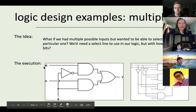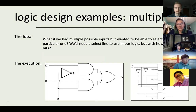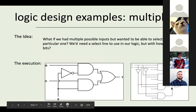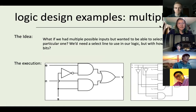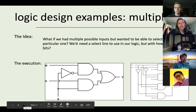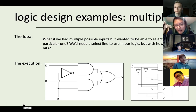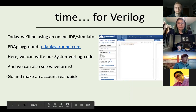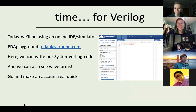Our next logic design example is the multiplexer or mux — used when you have multiple inputs but want to select just one. The number of select inputs depends on how many inputs you're representing: one select line for two inputs, two select lines (S1 and S0) for four inputs (I3, I2, I1, I0).